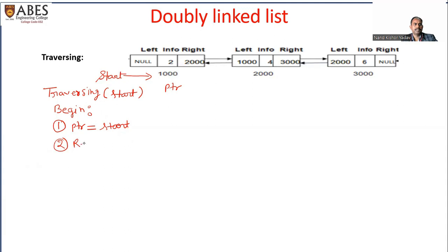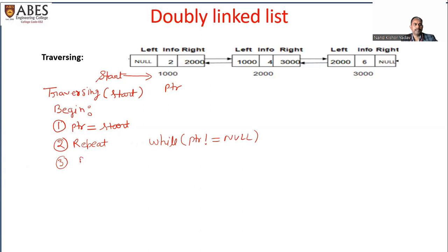We write a repeat-while loop with the condition: while ptr is not equal to null. In the next step, we print the information of each node: print info of ptr.